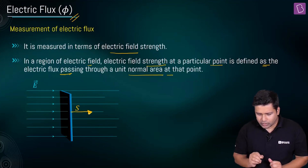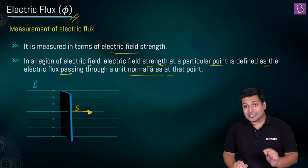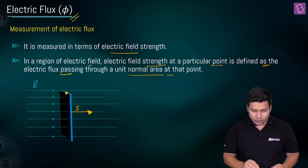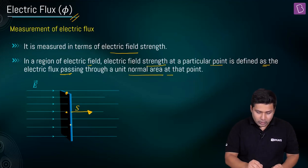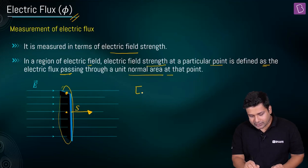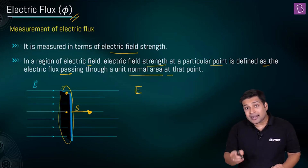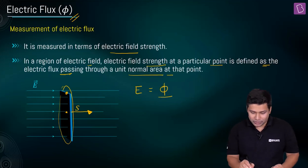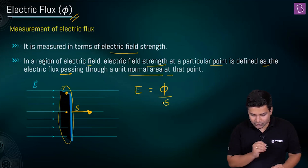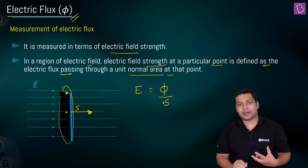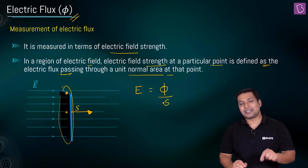To define the electric field intensity where this area is placed, electric flux and electric field are related such that electric field intensity E equals phi divided by the unit normal area — that is, E = φ/S. This is how you can define electric field intensity in terms of flux.